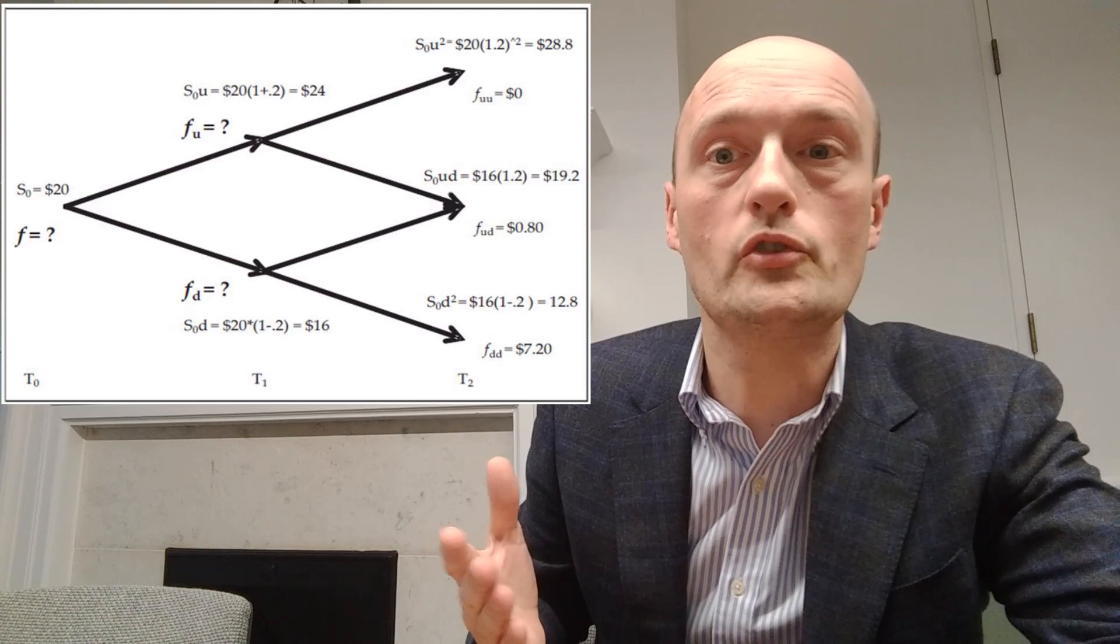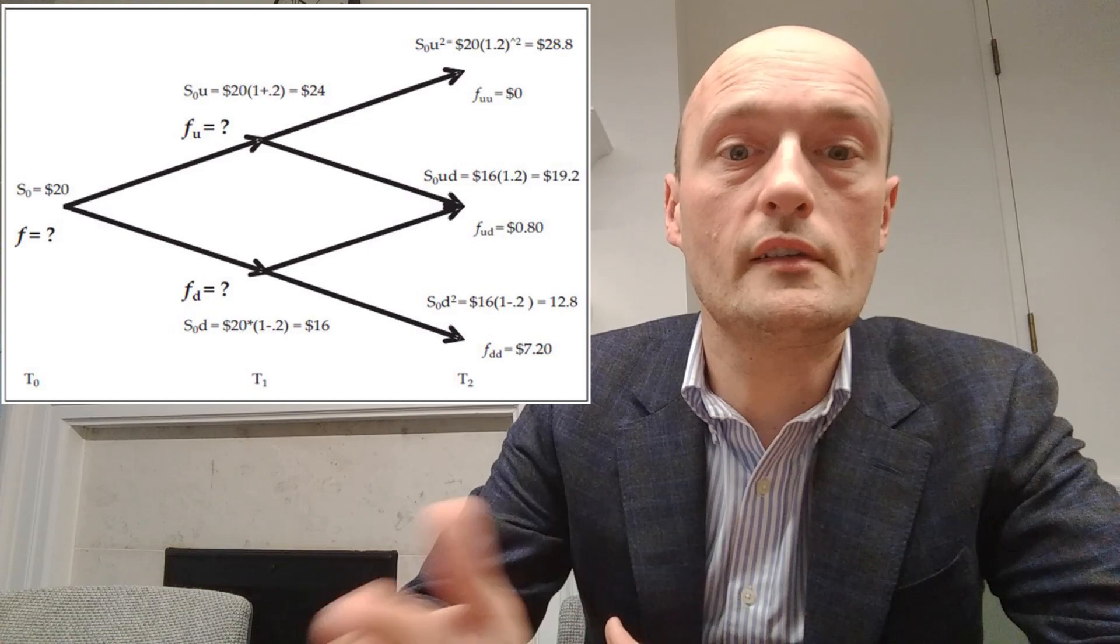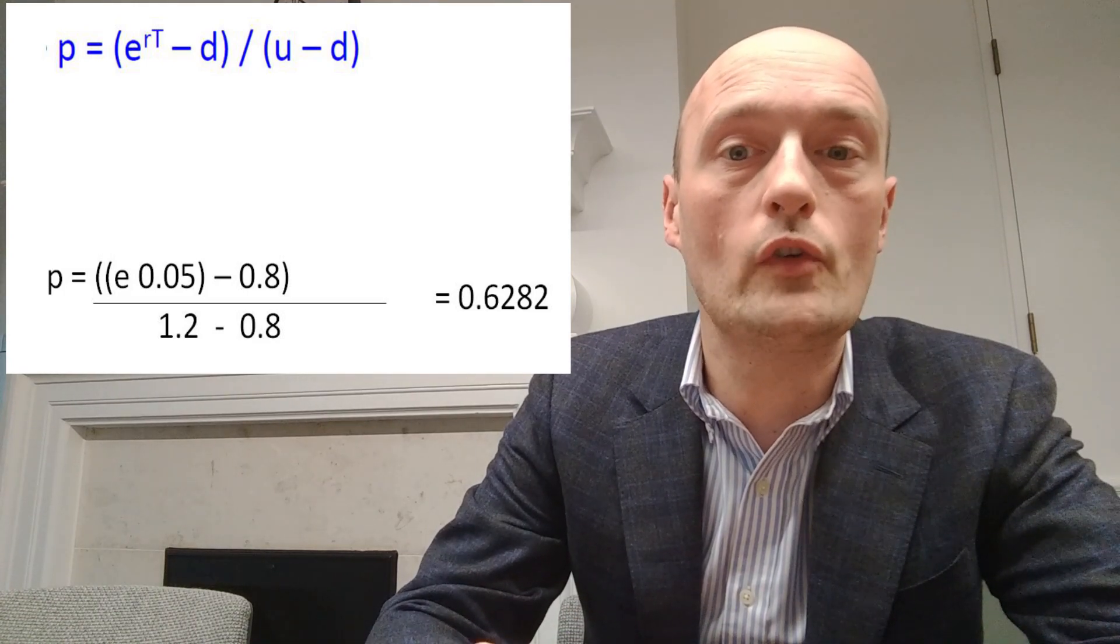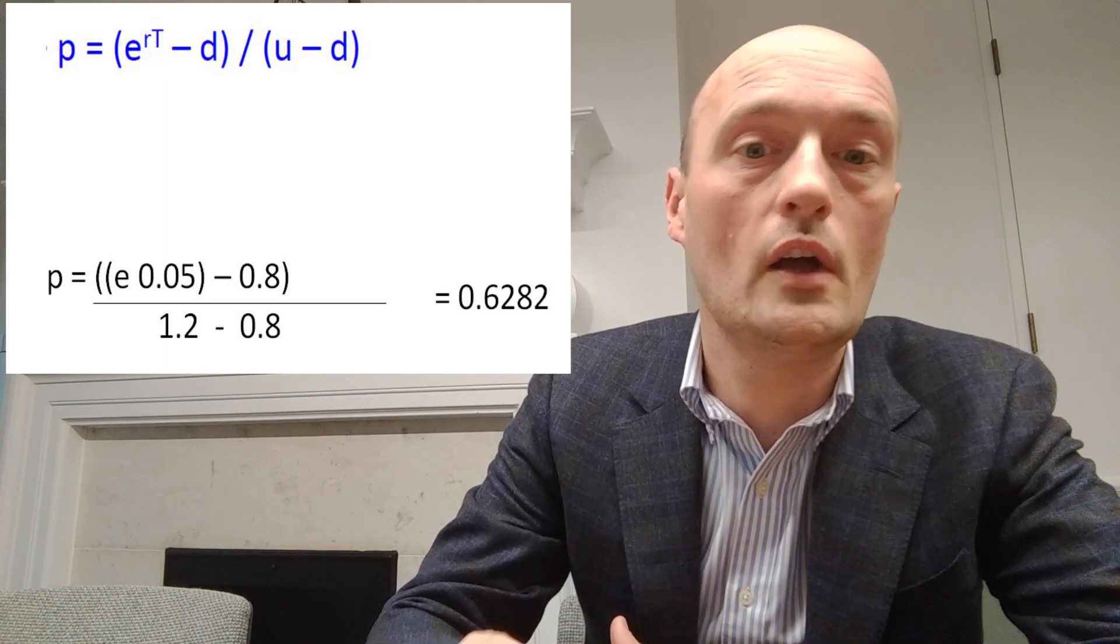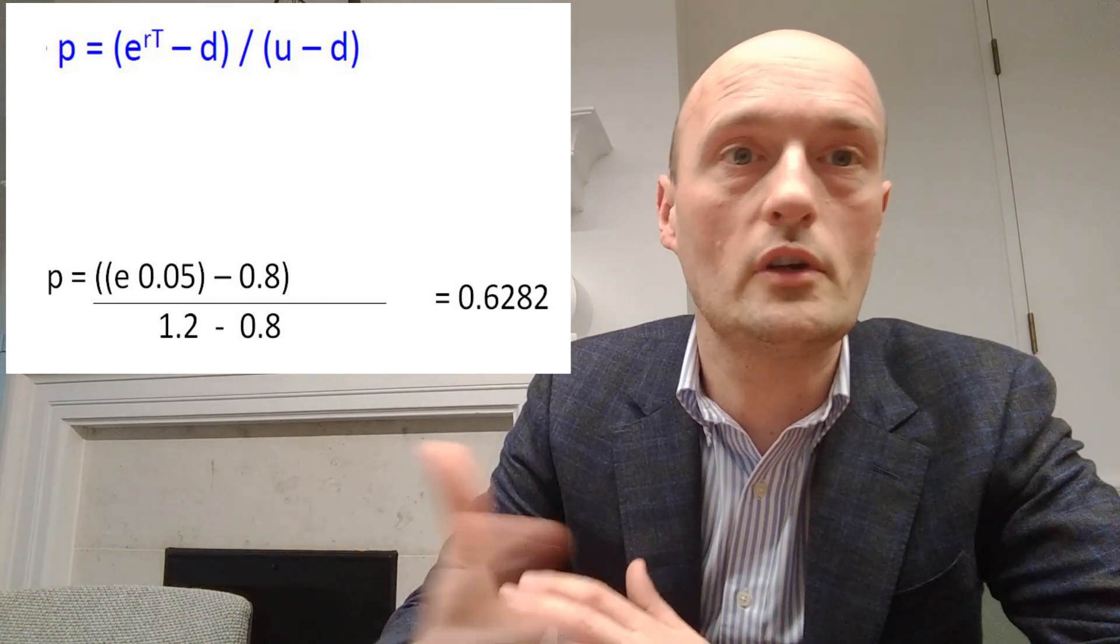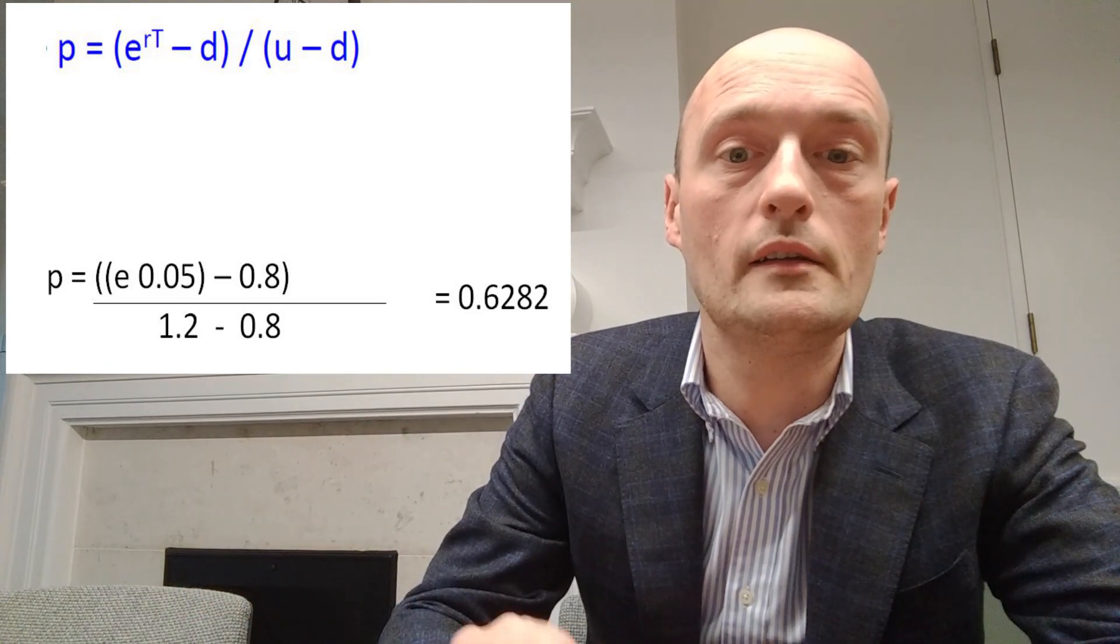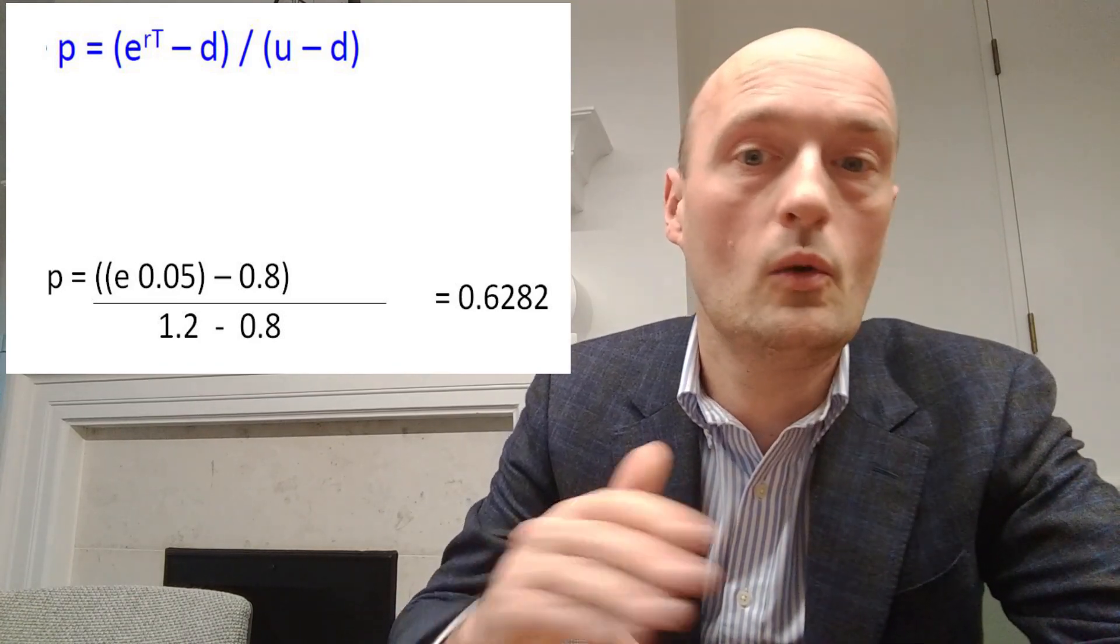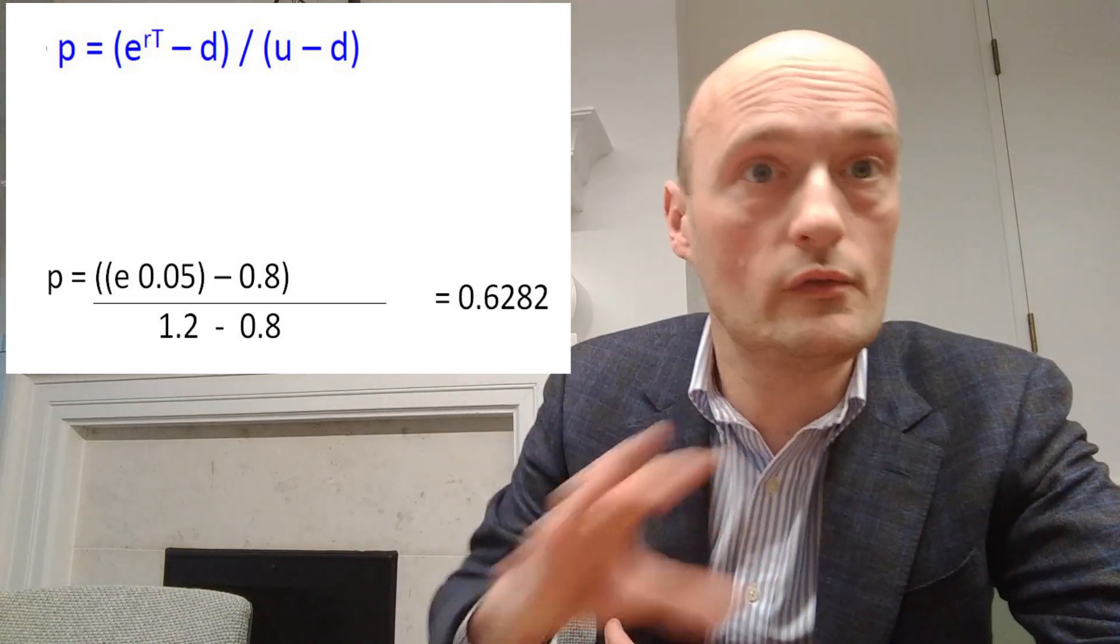So that's all the information we need written into our binomial tree. Now what we have to do is price the option. So we then of course need to calculate P. So we're using the same formula we used in the last video to calculate P. P equals e to the rT minus d over u minus d. So P is equal to e to the 0.05, we've made this a one-year expiration option so we don't need to do any more with that, so e to the 0.05 minus 0.8 over 1.2 minus 0.8.